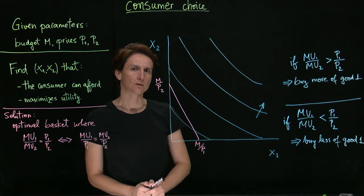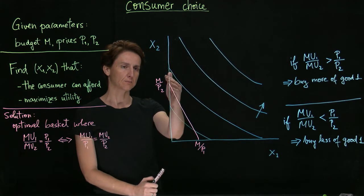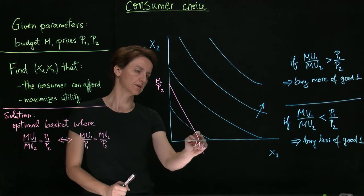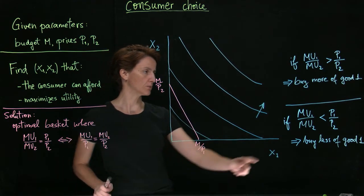Let's continue to think about the consumer's optimal choice problem. We said that, given a budget constraint, if we're somewhere along it where the slope of the indifference curve is flatter than the slope of the budget constraint, that would be this case, that is indicating that, at the margin,